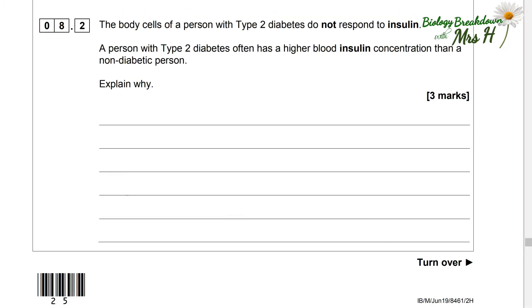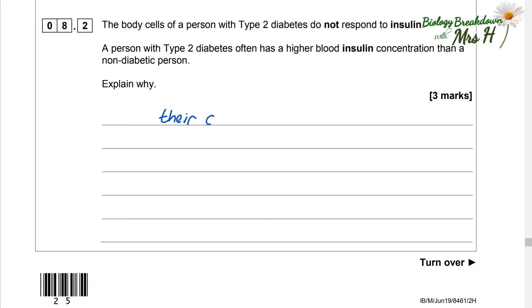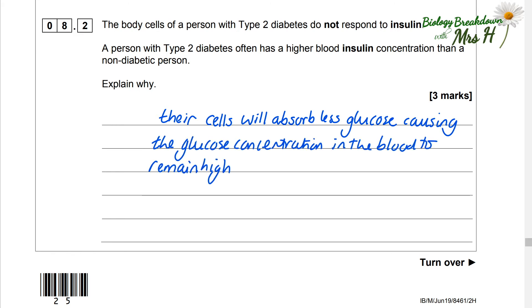The body cells of a person with type 2 diabetes do not respond to insulin. A person with type 2 diabetes often has higher blood insulin concentration than a non-diabetic person. Explain why. So if the body cells do not respond to insulin then their cells will absorb less glucose. So if less glucose is going into the cells it's building up in the blood. So the glucose concentration in the blood will remain high and that will trigger the pancreas to keep responding by secreting more insulin.